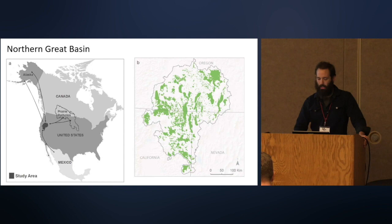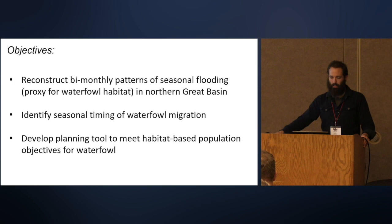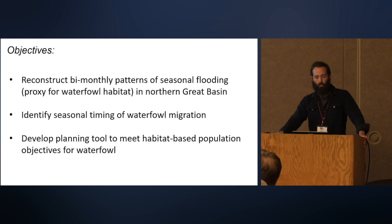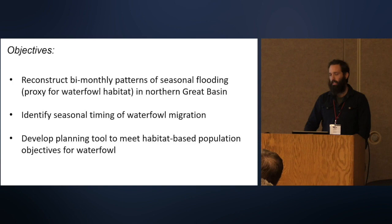There are three main objectives to this study. One is to reconstruct bi-monthly patterns of seasonal flooding in the Northern Great Basin — seasonal flooding and wet acres are used as a proxy for waterfowl habitat and waterfowl food critical to meeting their energetic demands for migration. Two, Patrick wanted to reconstruct the chronology of migration in this landscape using population counts across the region to identify the critical times when wildlife need these resources. Three, marry those two data sources to develop a planning tool to meet waterfowl objectives in this landscape.